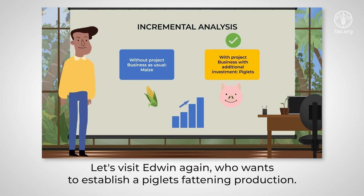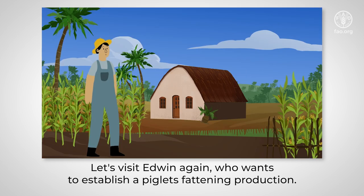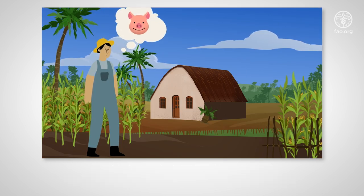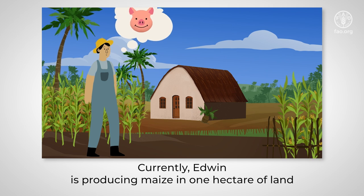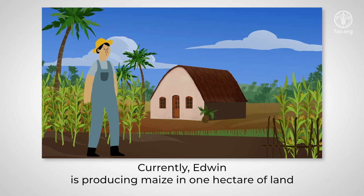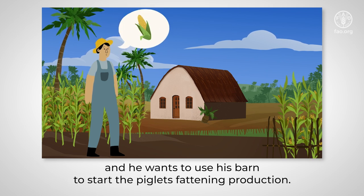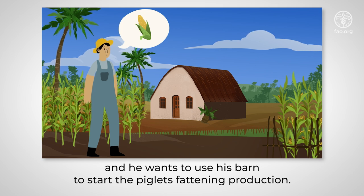Let's visit Edwin again, who wants to establish a piglets fattening production. Currently, Edwin is producing maize in one hectare of land and he wants to use his barn to start the piglets fattening production.